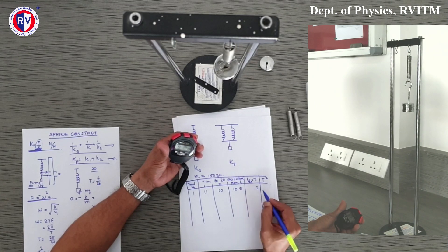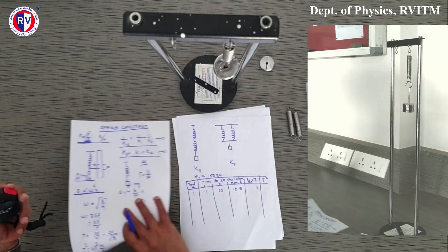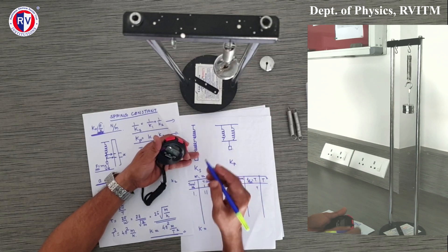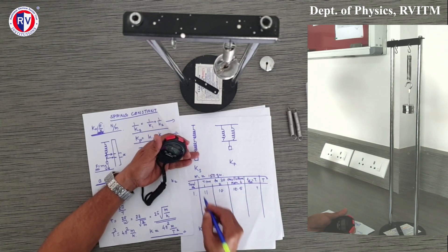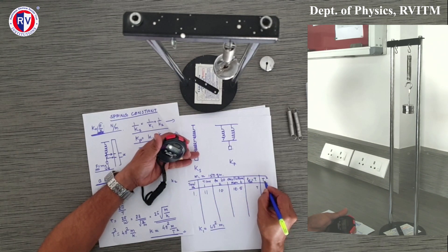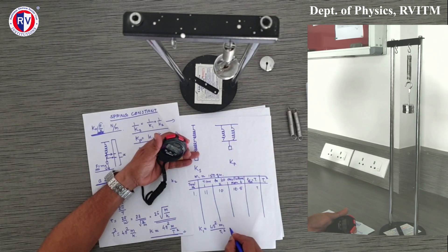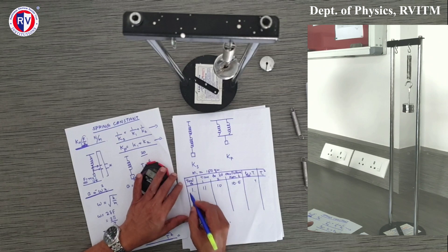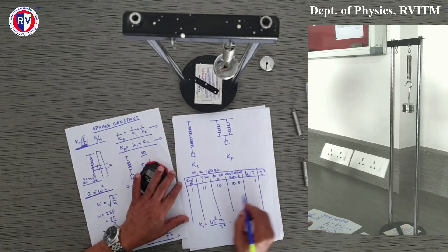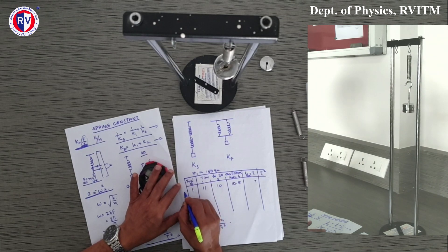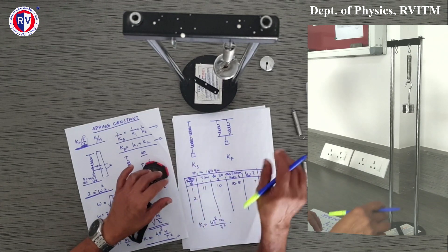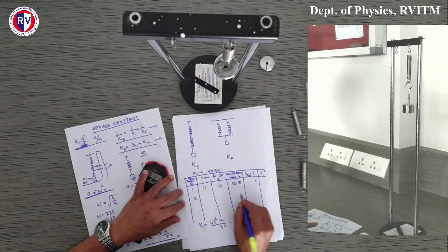This mean time divided by 20 gives the period T1. Then I calculate T1 squared and substitute into the equation: k1 = 4π²M1 / T1², where M1 is 150 grams. This gives the spring constant of the first spring. In the same manner I will do it for the second spring to find k2 and T2.